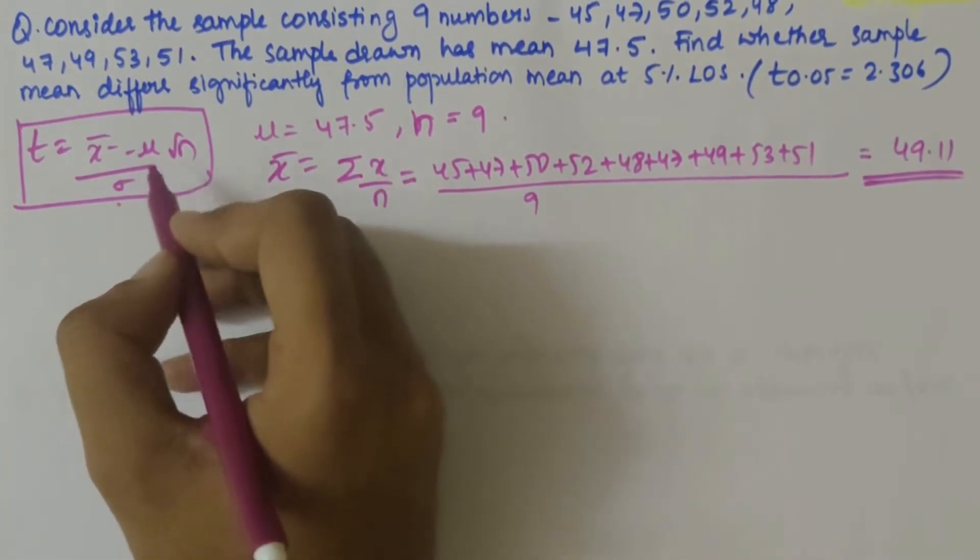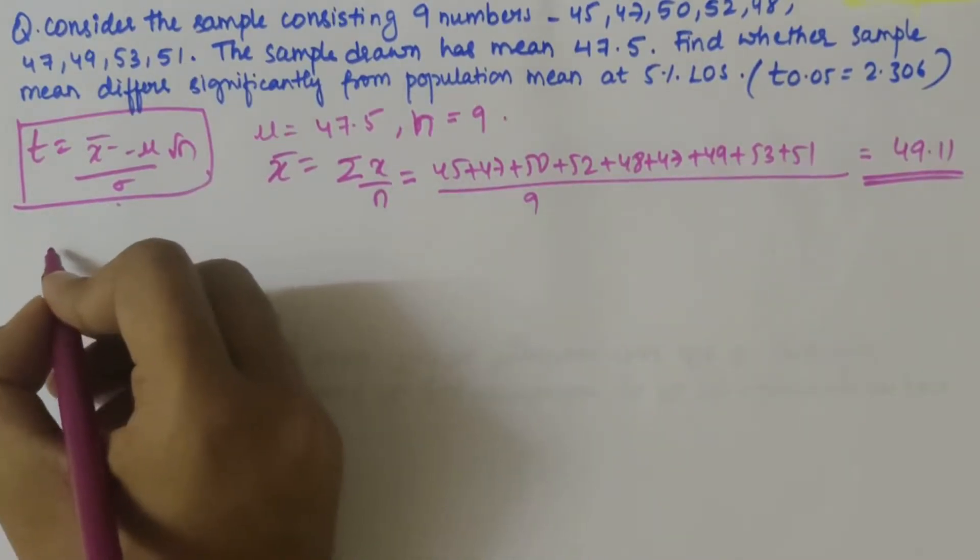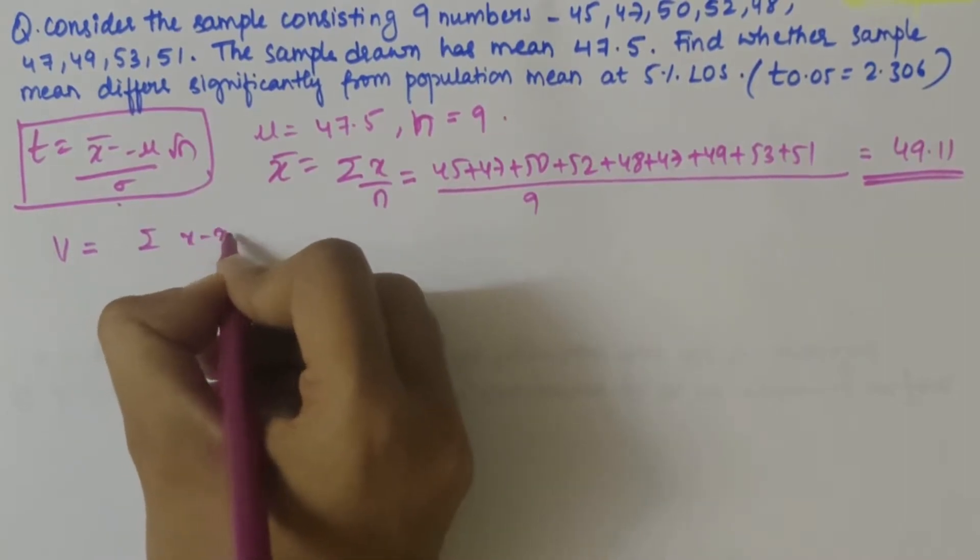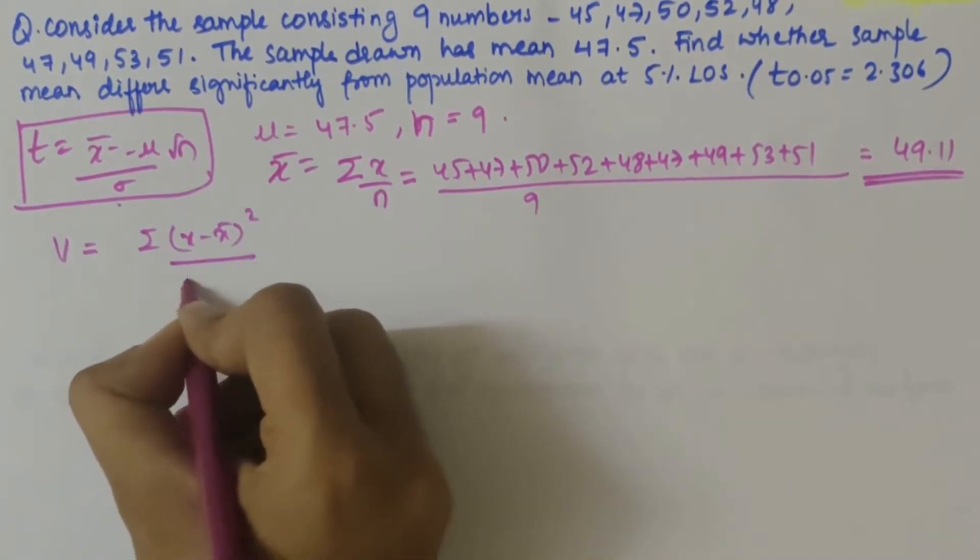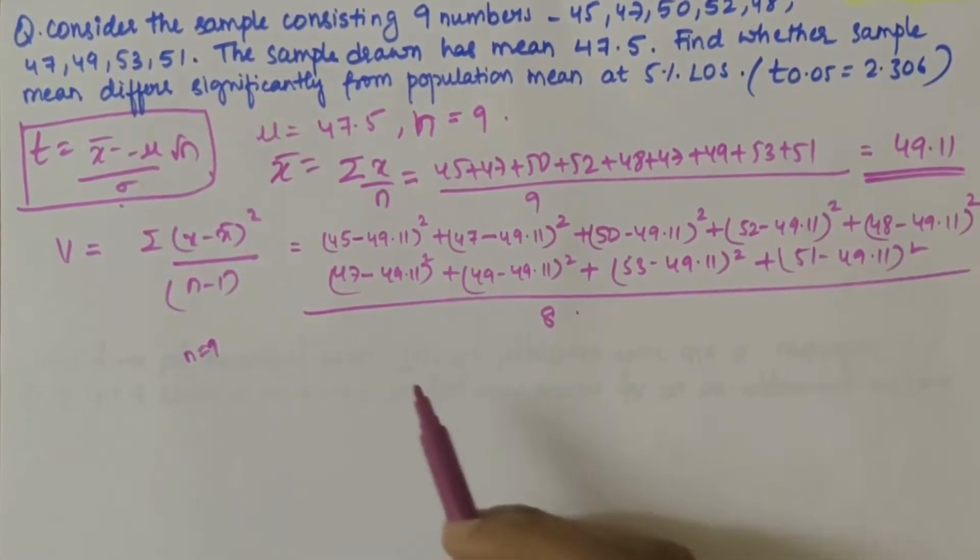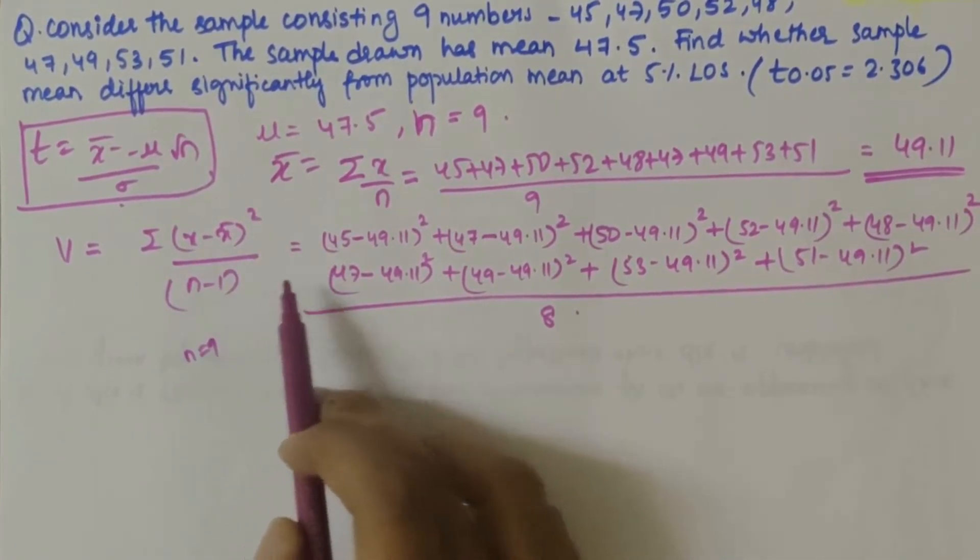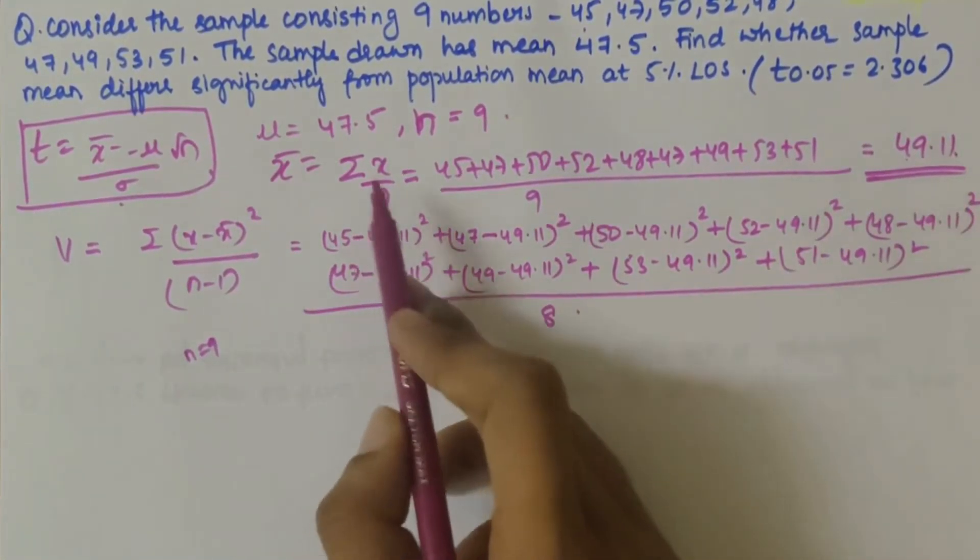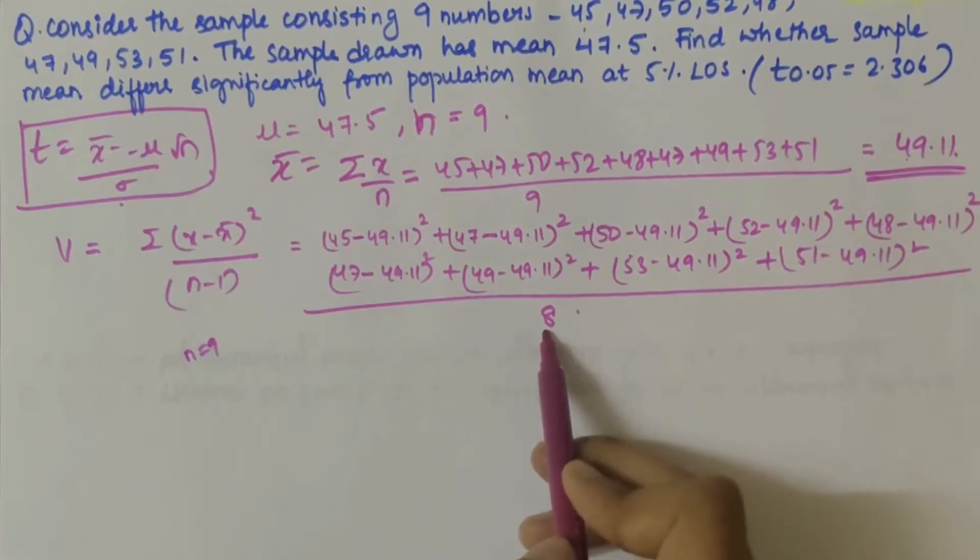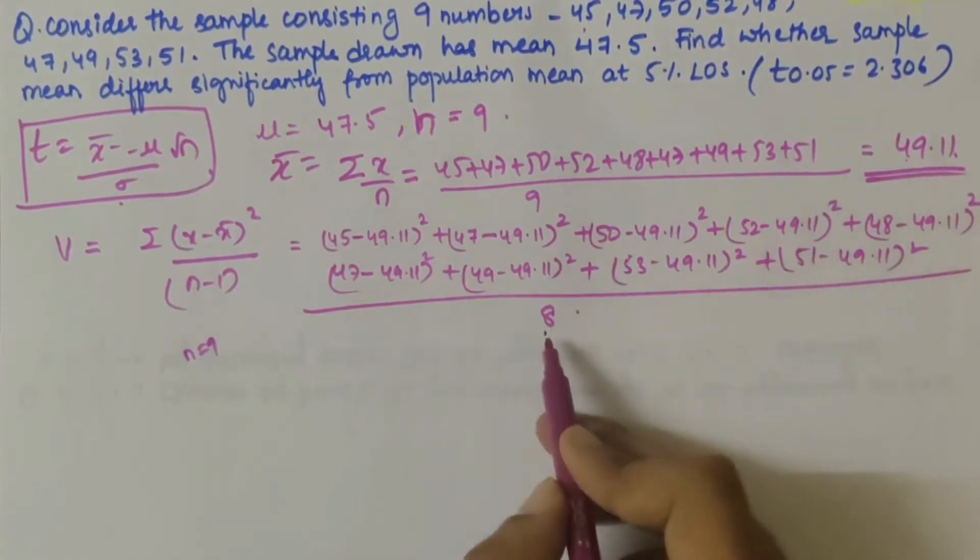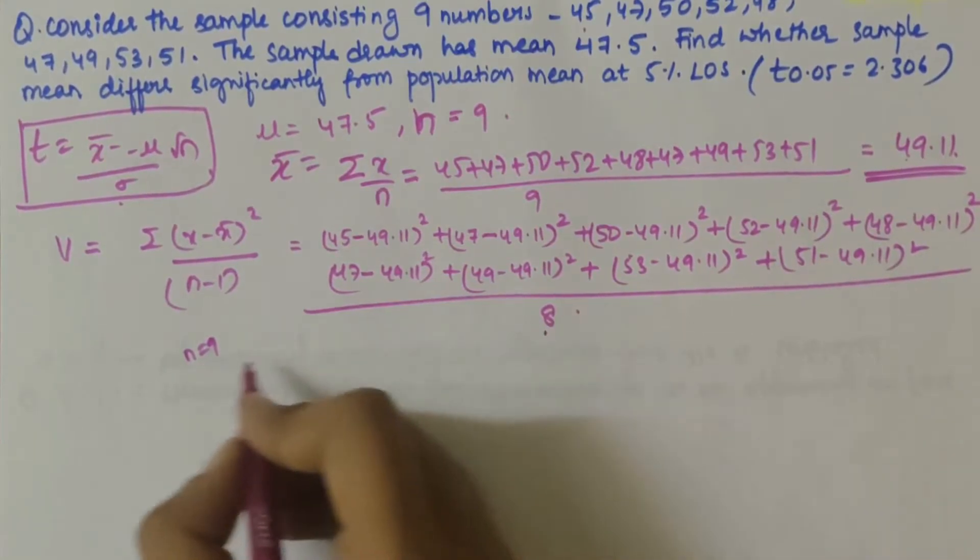X bar value we have found out. Now, sigma value we have to find out. But for that first, let's find out the variance formula: summation of (x minus x bar) whole square divided by n minus 1. That would be (45 minus 49.11) whole square, and adding up all those squared values, then dividing it by n minus 1, that is 8.